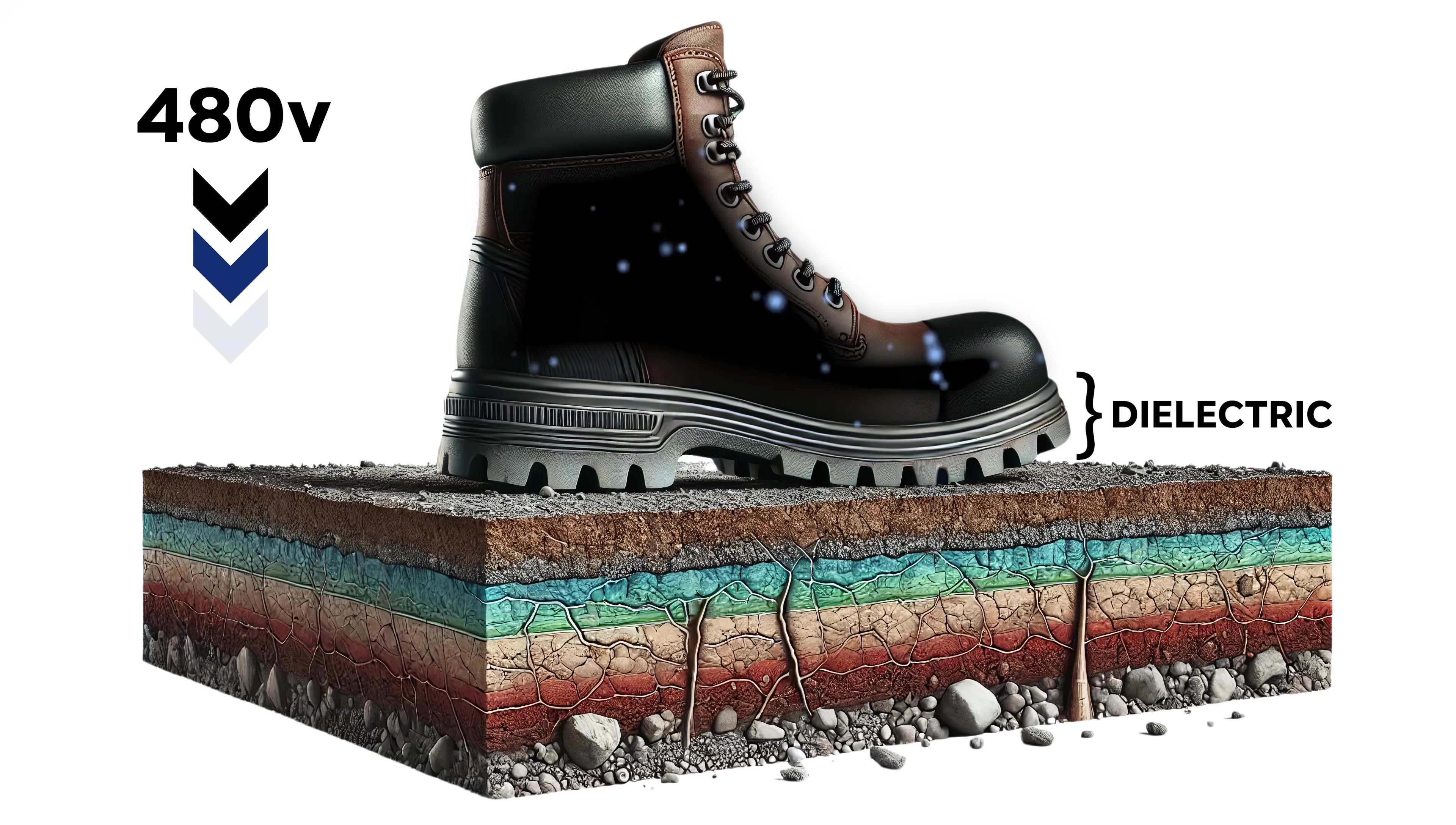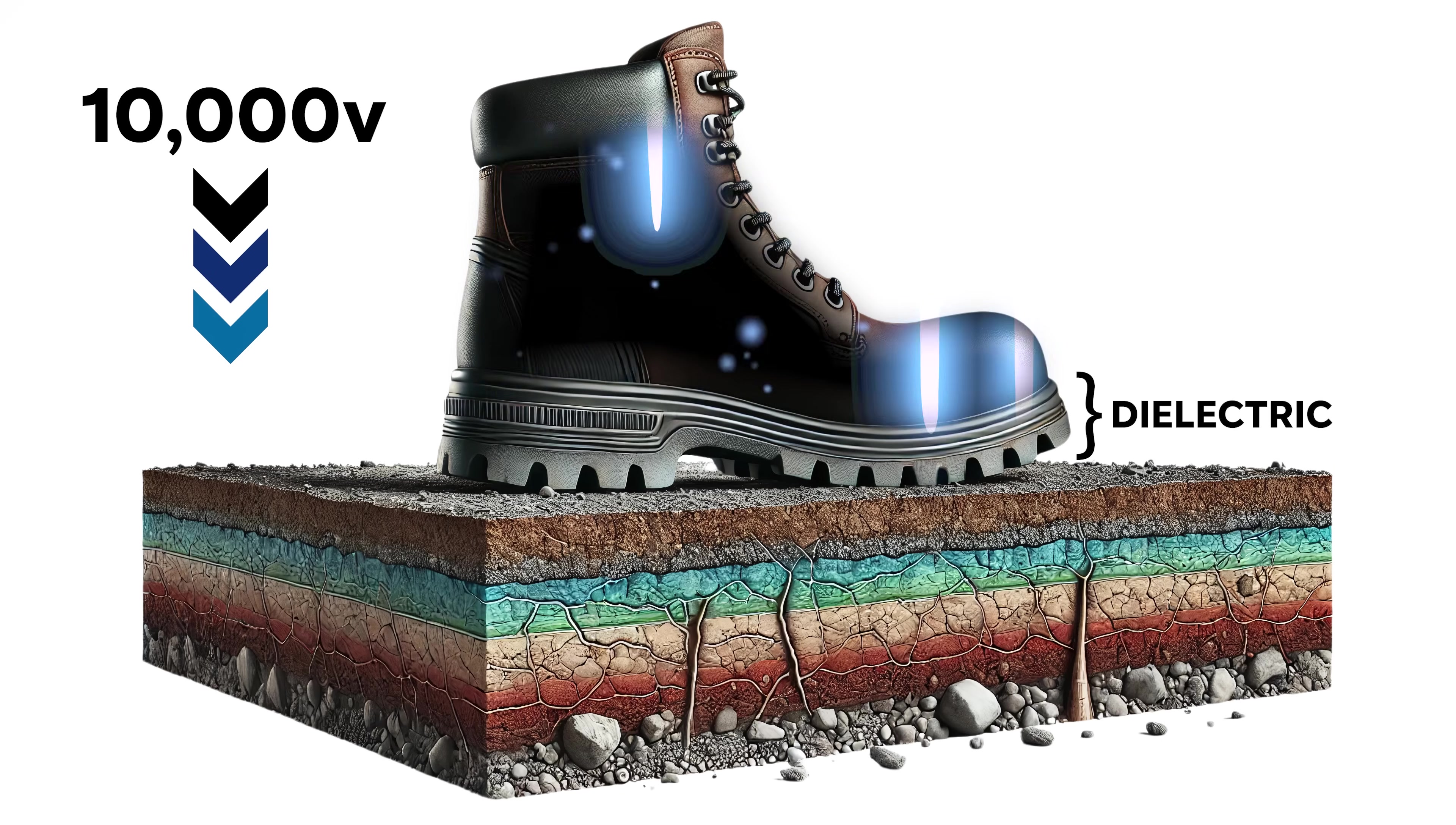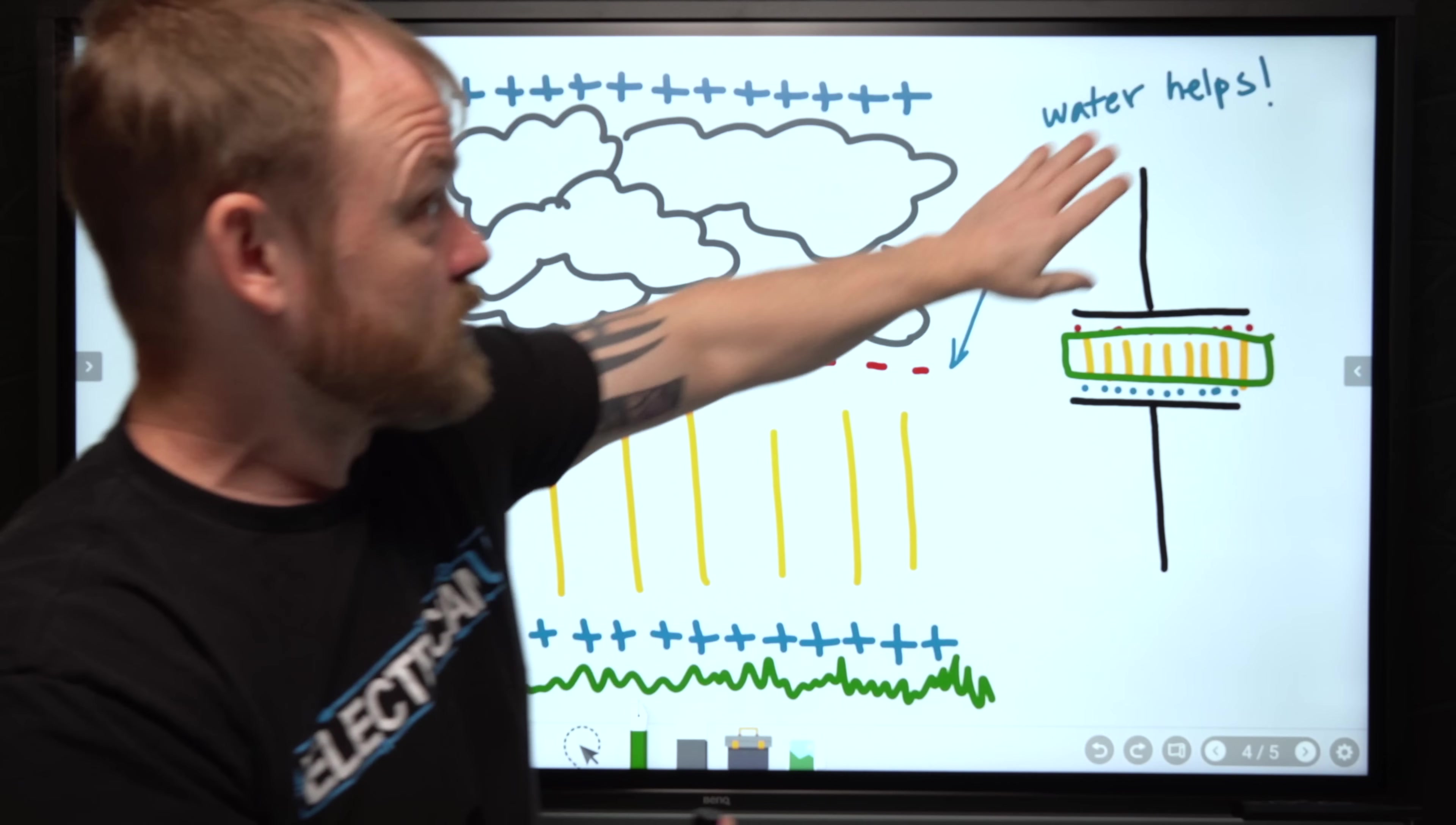But if you raise the voltage enough and you create a situation where the amount of voltage is greater than the strength of the dielectric, you can actually get current to flow through my boots and blow out the bottom of my boots. So it's all about the voltage level.